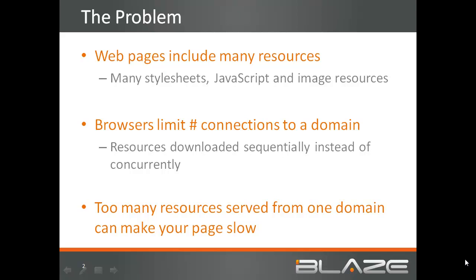However, web browsers impose a limit on the number of simultaneous downloads allowed from a domain. These limits were recommended back in 1999 as part of the HTTP 1.1 RFC as a way to avoid overloading a web server and a way to reduce internet congestion.